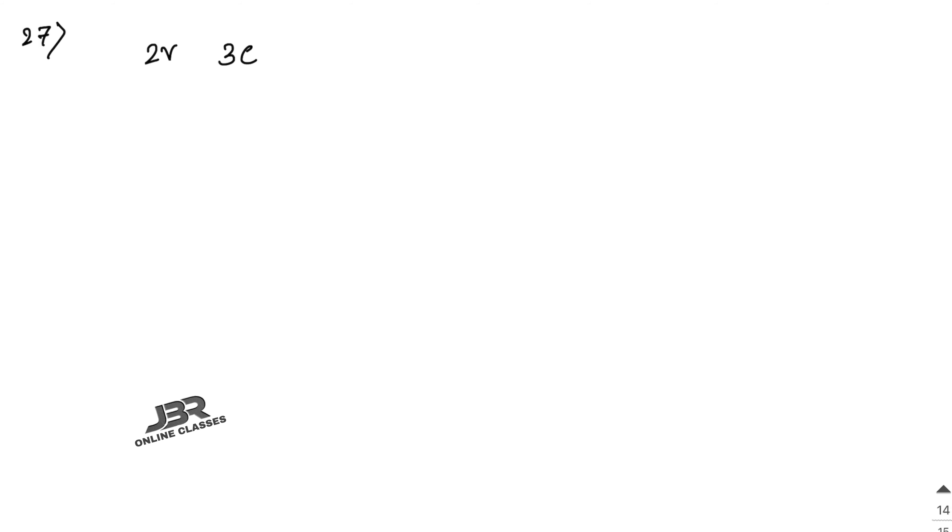Next, sum number 27: How many words, with or without meaning, each of 2 vowels and 3 consonants, can be formed with the letters of the word HONESTY? The letters are H, O, N, E, S, T, Y — total 7 letters.